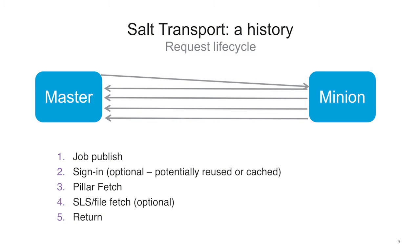In this remote execution world, the request looks something like this: you go to the master and publish a job saying, hey Minion, go run a high state. The Minion gets that job and may need to sign in with the master to get the pillar and do the key exchange. Then it'll grab the pillar for the state run, fetch SLS files or config files, and once done with the big return, ship it back to the master. All this is done over 0MQ.